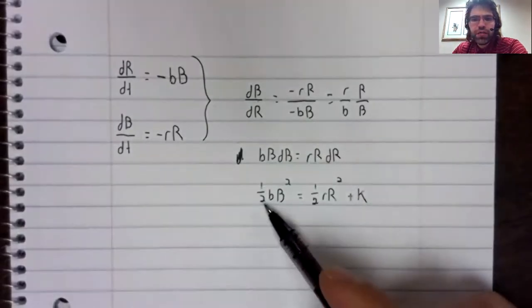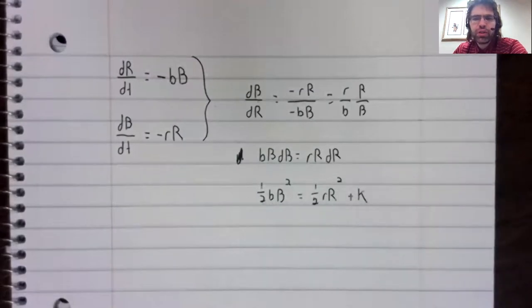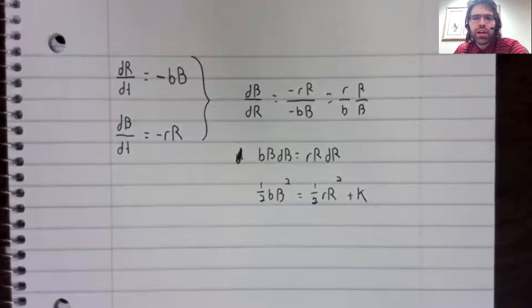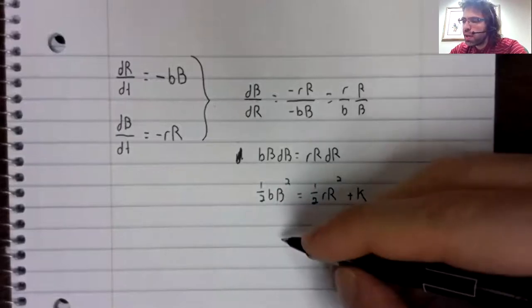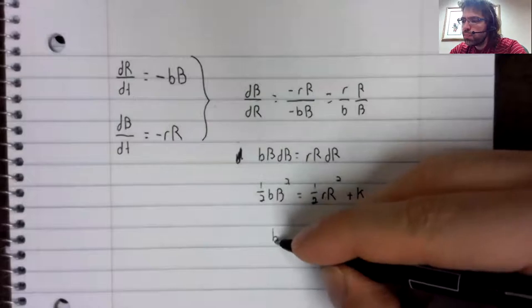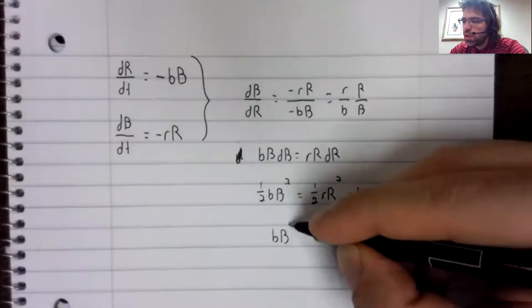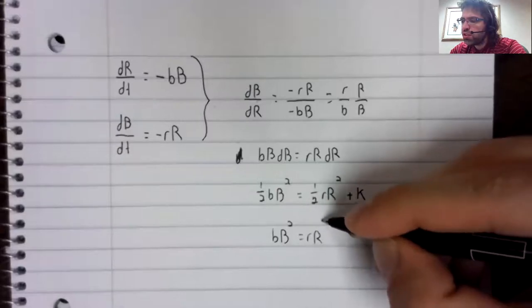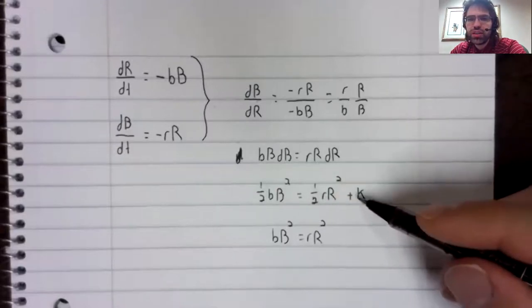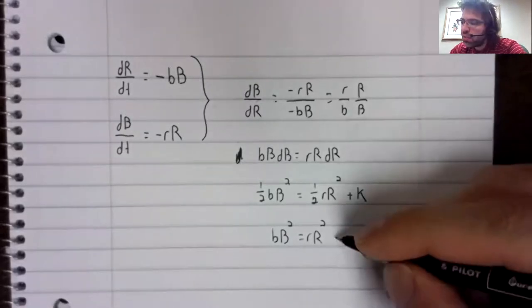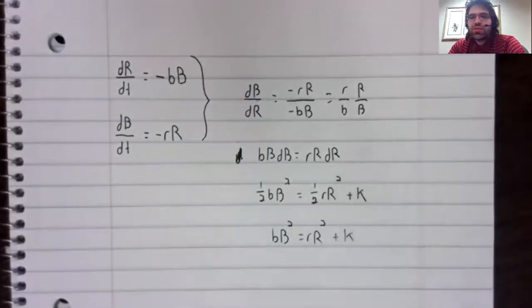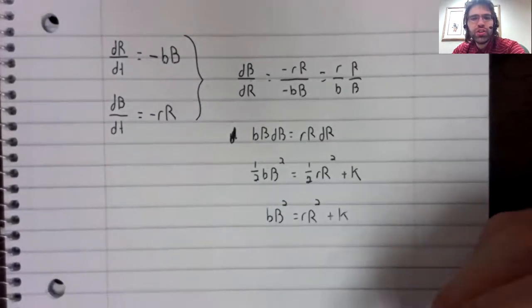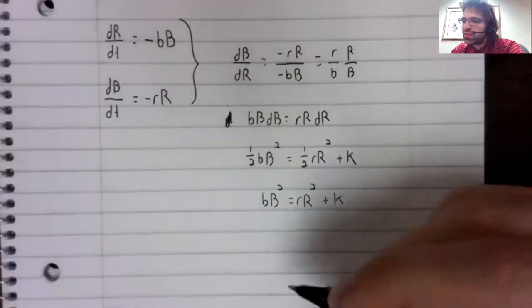We can get rid of these one half terms. In particular, we can multiply both sides of this equality by two. And because this is an arbitrary constant of integration, this K times two is still an arbitrary constant of integration.